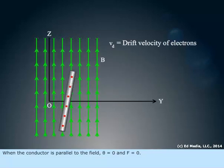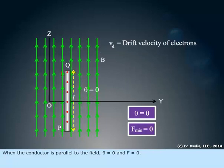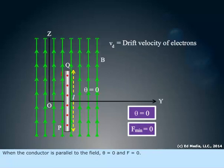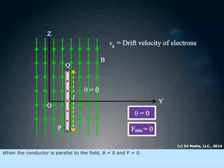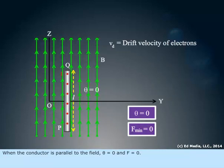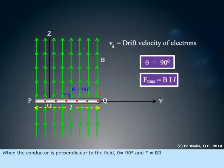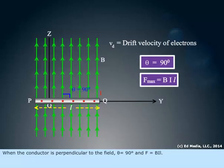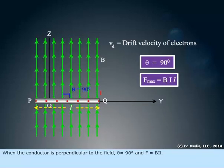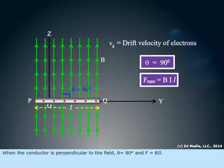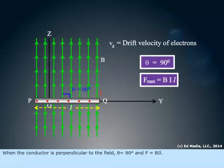When the conductor is parallel to the field, theta equals zero and F equals zero. When the conductor is perpendicular to the field, theta equals 90 degrees and F equals BIL.